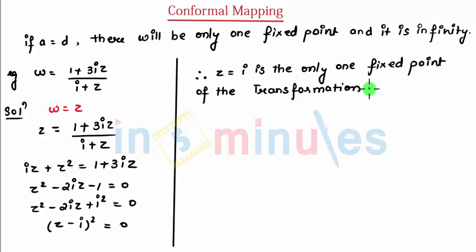So that was the example of fixed point of bilinear transformation, which is solving more sums on this and some derivation of fixed point for bilinear transformation. Thank you for watching.